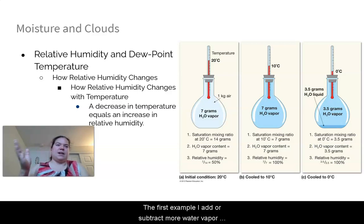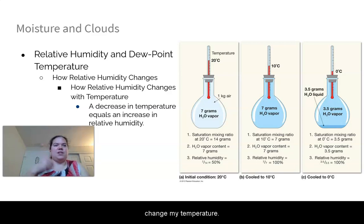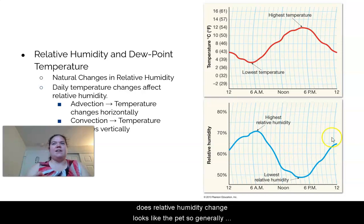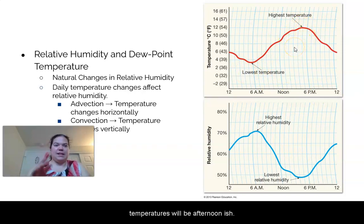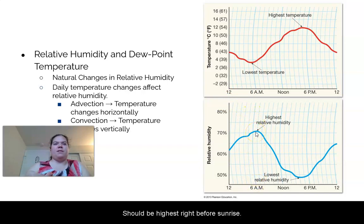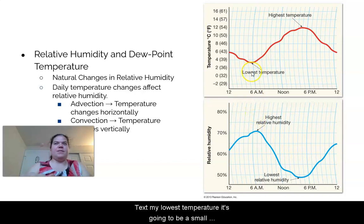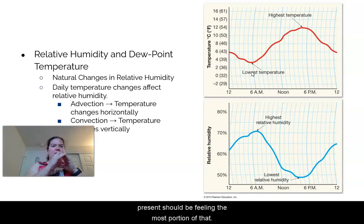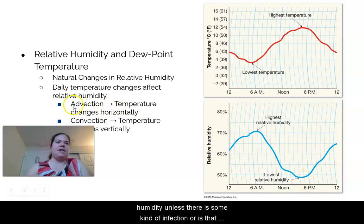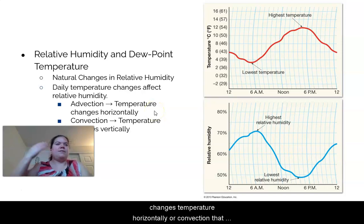To summarize: you can change relative humidity by adding or subtracting water vapor, or by changing temperature. During the day, the lowest temperature is just before sunrise and the highest is in the afternoon. The opposite is true for relative humidity — it should be highest just before sunrise (smallest bucket size, most of it filled) and lowest in the afternoon (largest bucket), unless advection or convection changes the temperature horizontally or vertically.